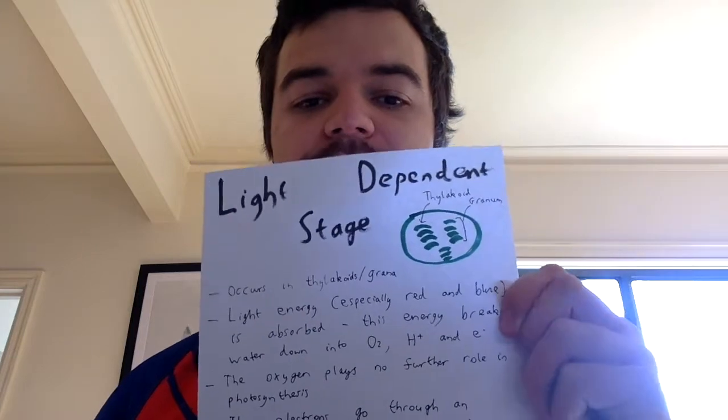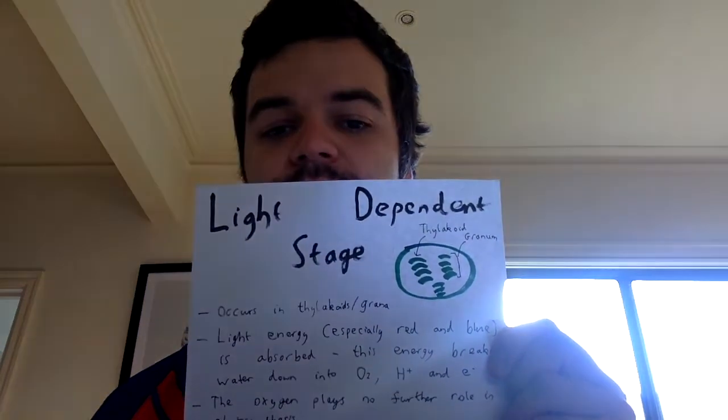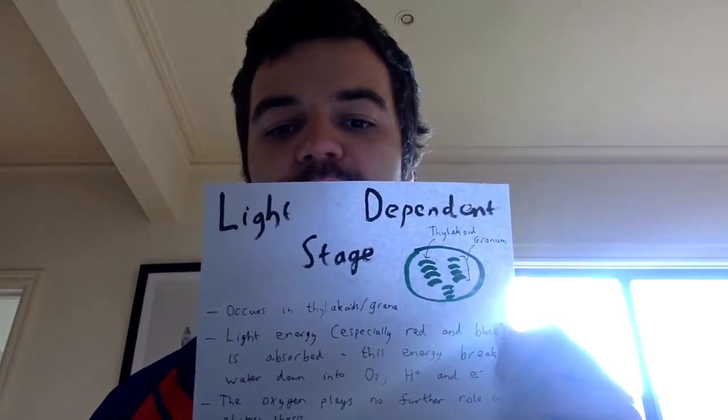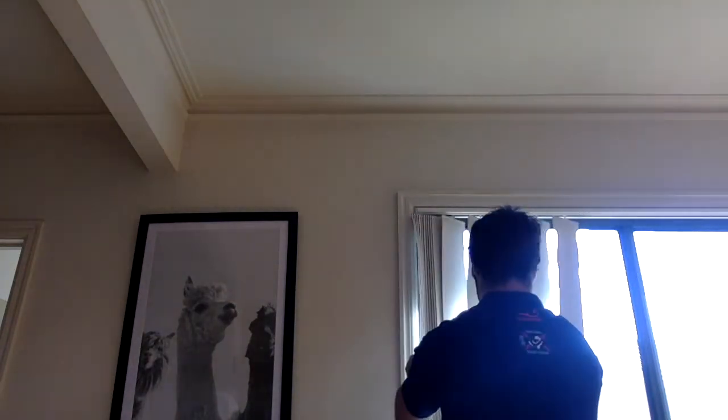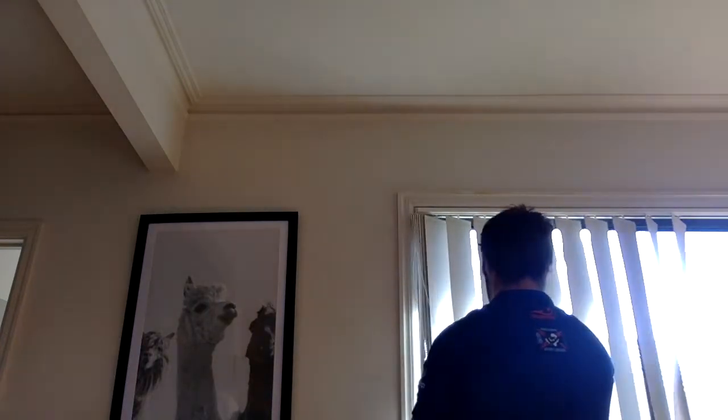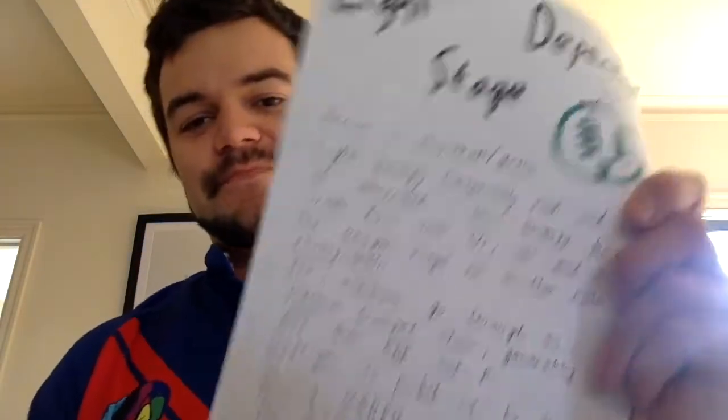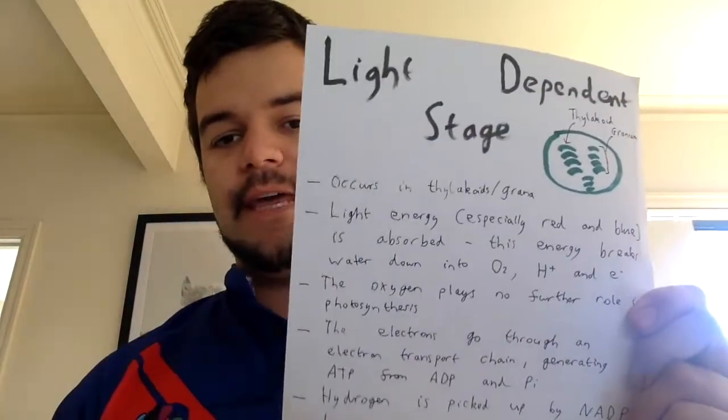Light energy, particularly red and blue light waves, are absorbed by chlorophyll in the thylakoids. Chloroplasts have a green colour due to chlorophyll — they're absorbing the red and blue wavelengths and reflecting the green wavelengths, giving them a green colour. So red and blue are the wavelengths most used for photosynthesis.